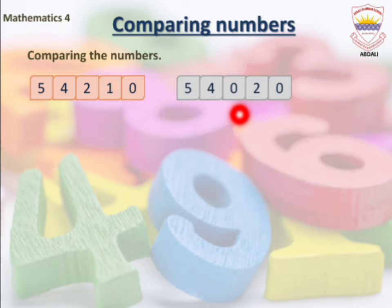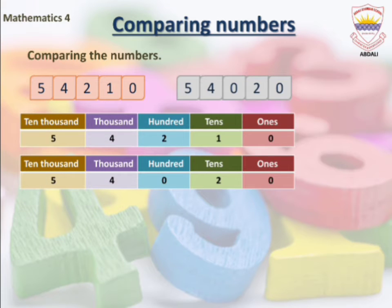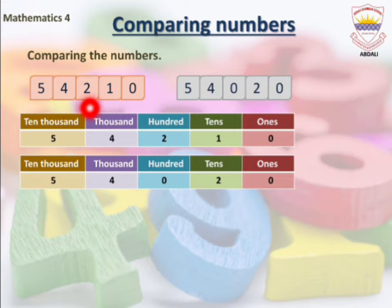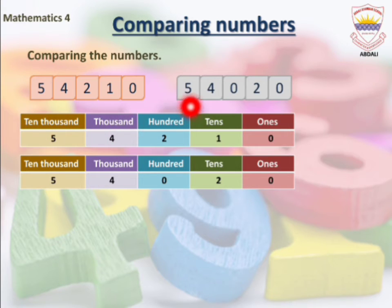Let's compare these numbers using our first method — the place value chart. First, we put our first number, 54,210, in the place value chart. Starting from the right, we write zero under ones, one under tens, two under hundreds, four under thousands, and five under ten thousands.